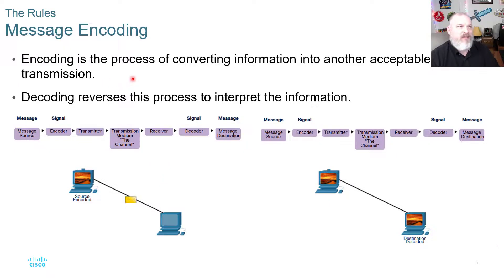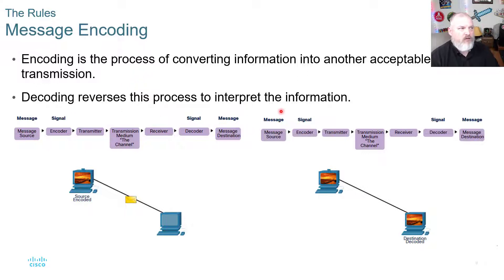Encoding is the process of converting information into another acceptable form for transmission. Decoding reverses that process to interpret the information. So we encode it, transmit it, and decode it — very simple.